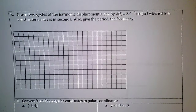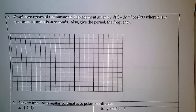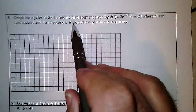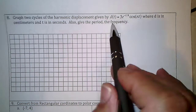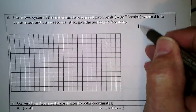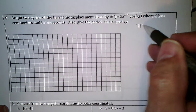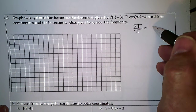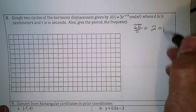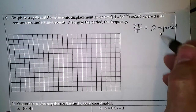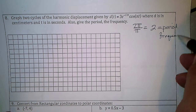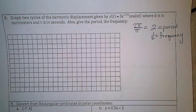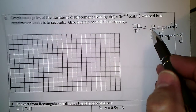Number eight: graph two cycles of this harmonic function, where d is in centimeters and t is in seconds. Also give the period and the frequency. The period for cosine is 2π divided by π, so the period is 2. The frequency is 1 over 2 — half a cycle per second, or in 2 seconds you'll have a full wave.